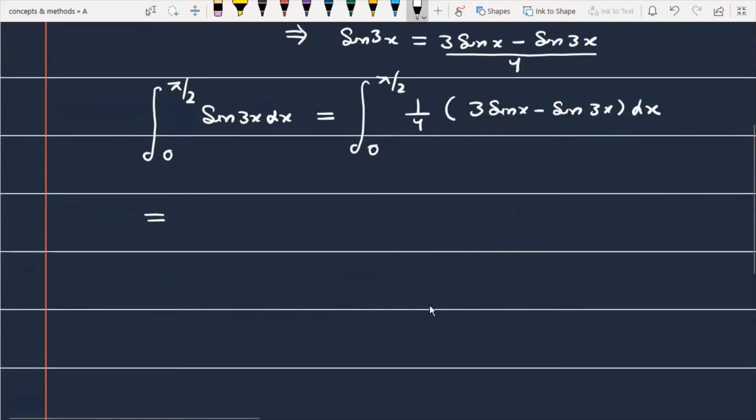We can simplify this further. First we can write it 3 by 4, integral 0 to π/2 sin x dx. And next we will have 1 by 4, integral 0 to π/2 sin 3x dx. Now we have to integrate this function.